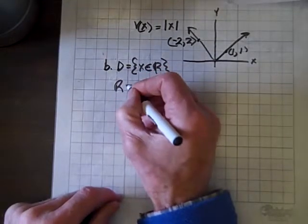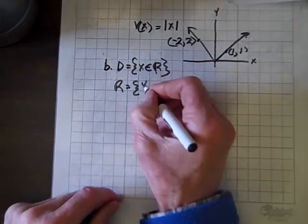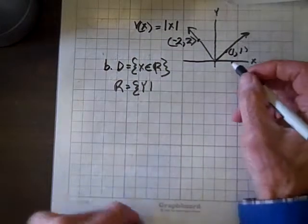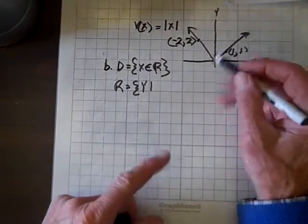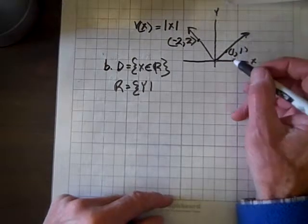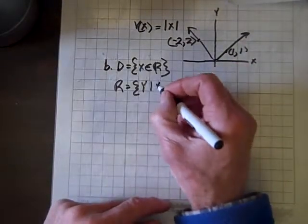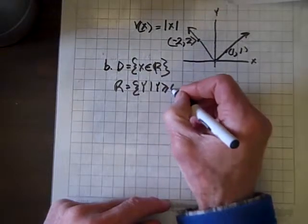As for the range, that equals the set {y} such that, by inspection, the minimum y value is zero. All positive y values will be on this graph, so y ≥ 0.